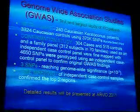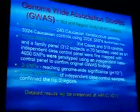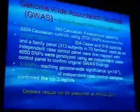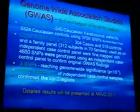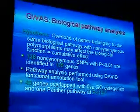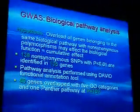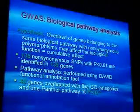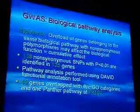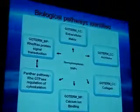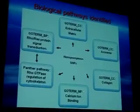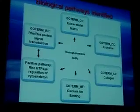Fine mapping of independent case-control samples confirmed the top two regions. Unfortunately I can't tell you the specific genes because I've submitted this to ARVO, where all the information will be presented in a detailed 10 to 15-minute analysis. GWAS also allows you to do biological pathway analysis — you look at an overrepresentation of genes belonging to the same biological pathway and using a computer program called DAVID, you figure out what pathways may be involved in the disease process. Pathways of interest include the extracellular matrix pathway, the calcium binding pathway, and the collagen pathway, which is of great interest to us.